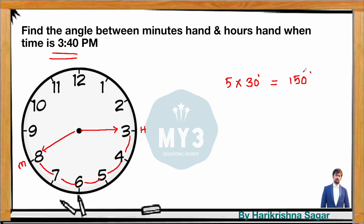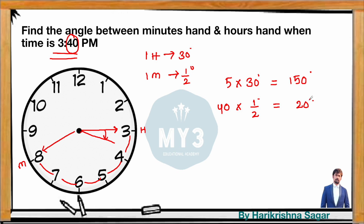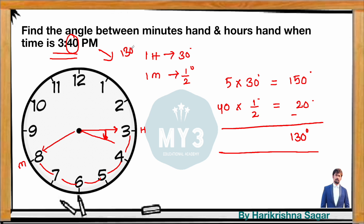But 150 degrees is not the direct answer, because the hour hand doesn't stick exactly at 3 — it tilts towards 4 as time passes. So we need to account for the 40-minute tilt: 40 × 0.5 = 20 degrees. This tilt comes inside, so we subtract: 150 − 20 = 130 degrees. That is the angle at 3:40.